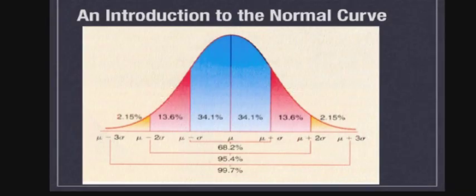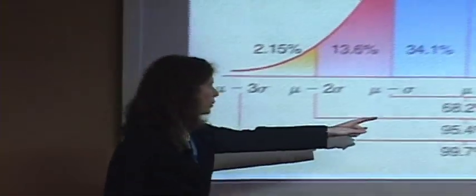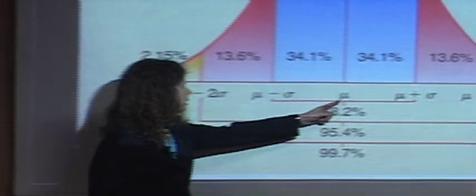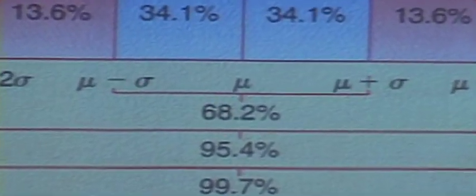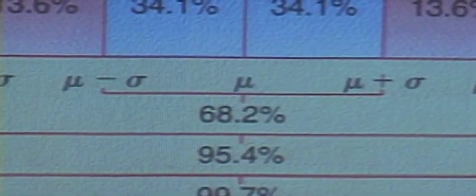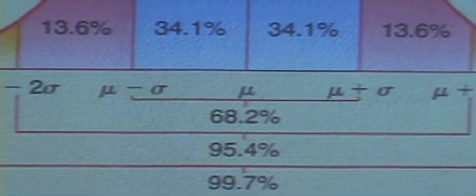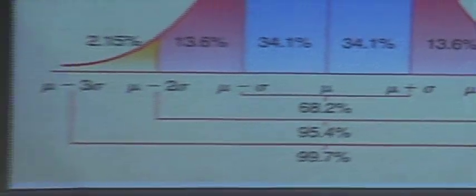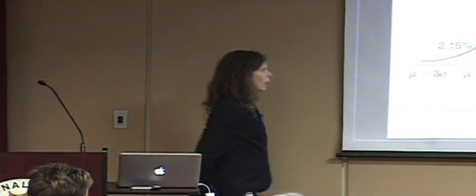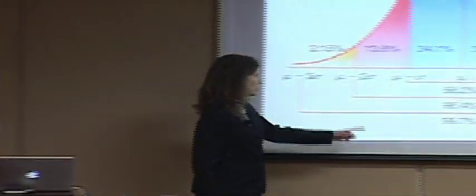A lot of behaviors in the world that are statistical actually have the behavior of the normal curve in the following sense. This symbol mu here, that's the average. So when you say the average income is such and such, or the average IQ is such and such, what you're talking about is this middle point.